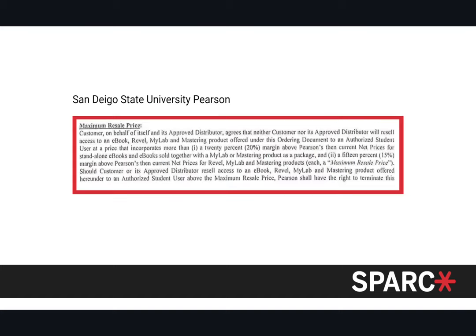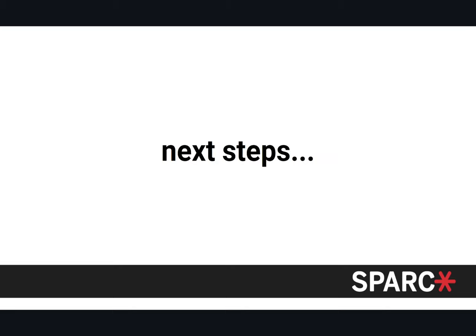The maximum resale price is usually 15–20% for Pearson, which is enforced very strictly. We also see it occasionally in Cengage and McGraw-Hill contracts, but Pearson is the most strict at 15%. This means whatever the publisher sells the book to the bookstore for, the bookstore can only mark it up by at most 15%.